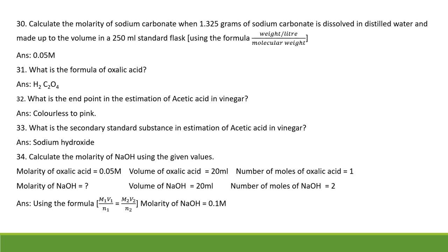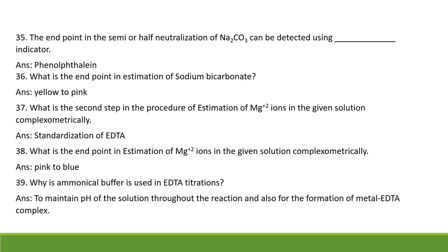What is the formula of oxalic acid? H2C2O4. What is the end point in the estimation of acetic acid in vinegar? Colorless to pink. What is the secondary standard substance in estimation of acetic acid in vinegar? Sodium hydroxide, NaOH. Using the formula M1V1/N1 = M2V2/N2, the concentration of NaOH works out to 0.1 M.